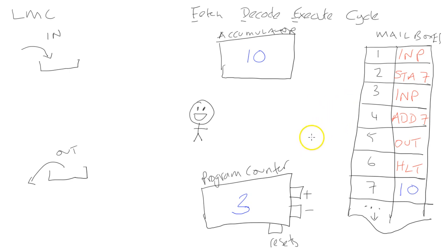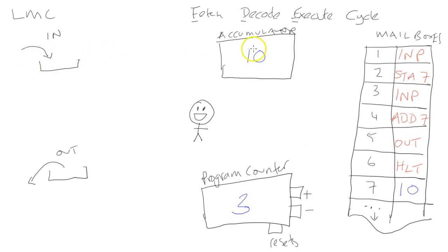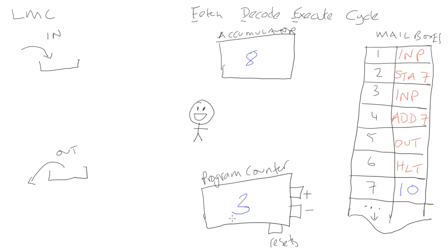He walks over to position 3, fetches the instruction which is input, decodes it as an input, and executes the command. He walks towards the in-tray where there is another number waiting - number 8. His job is to take that 8 from the input tray and take it over to the accumulator. Whatever was in the accumulator is removed and replaced with the new number, so the accumulator now holds 8. Having done that, he goes to the program counter and increments it from 3 to 4.